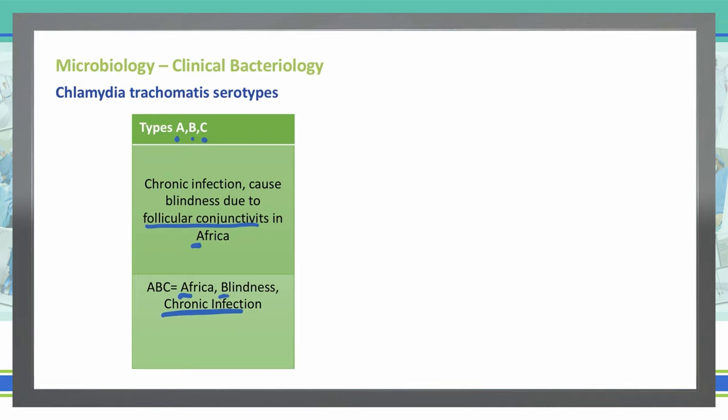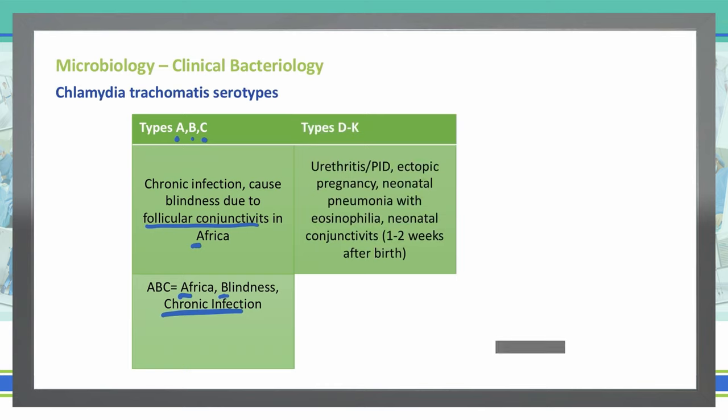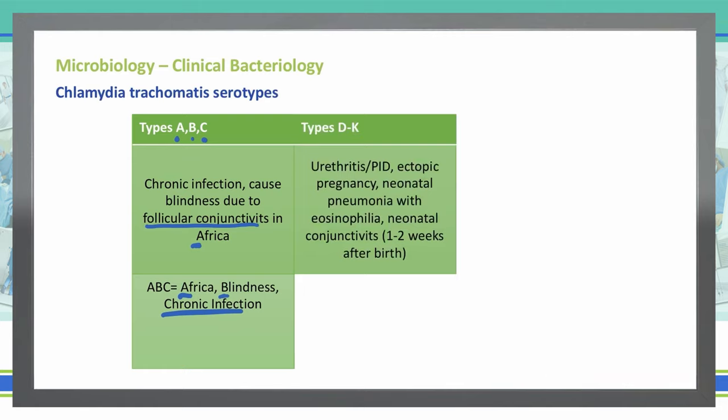The next serotypes we'll discuss are types D through K. These cause urethritis and pelvic inflammatory disease. They can also lead to ectopic pregnancies due to scarring, neonatal pneumonia with eosinophilia, and neonatal conjunctivitis that typically shows up between one and two weeks after birth. This is due to exposure to the chlamydia bacteria during birth as the baby passes through the birth canal of the infected mother.